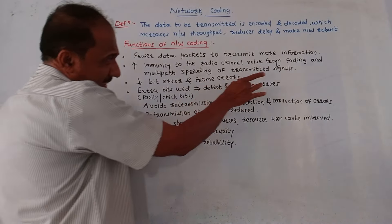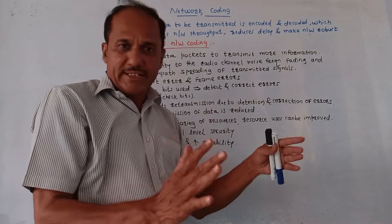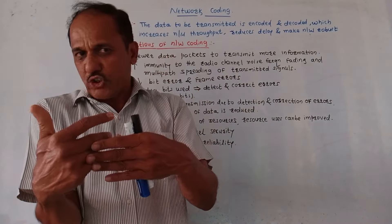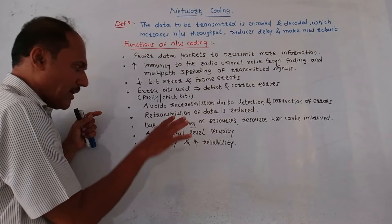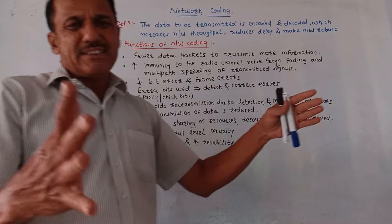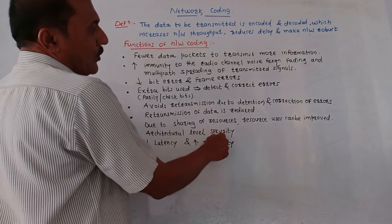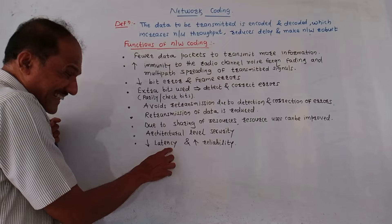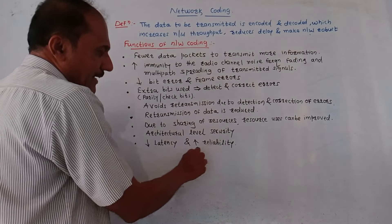Since error detection and correction is possible at the receiver end through network coding, retransmission of data is avoided or reduced. In normal circumstances, if there are errors and the receiver does not send an acknowledgement, the transmitter has to resend the data. Due to sharing of resources, resource usage can be improved, and network coding provides architectural-level security. It also reduces latency — the time delay between transmitted and received data — and increases reliability.